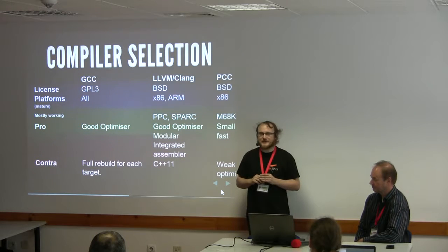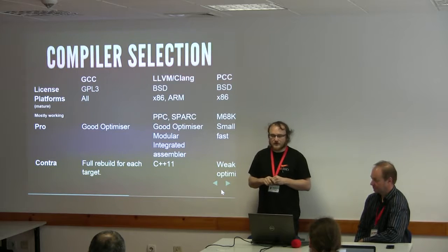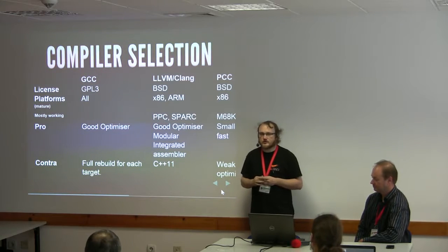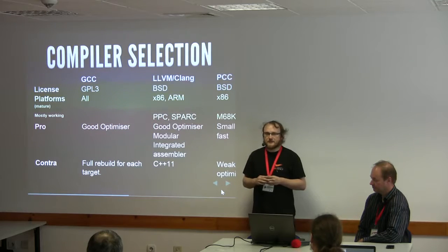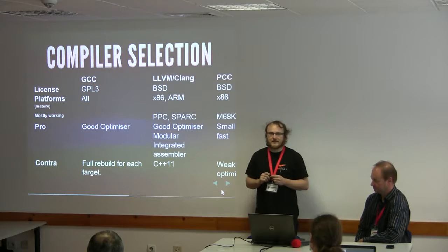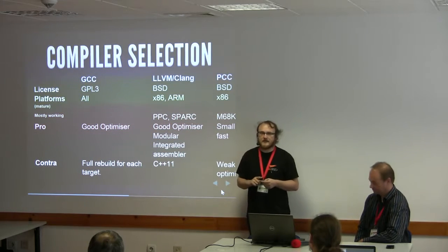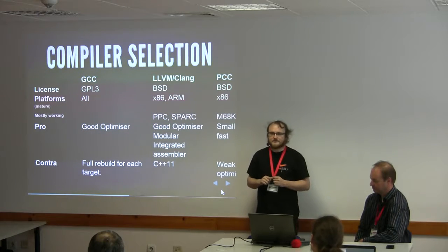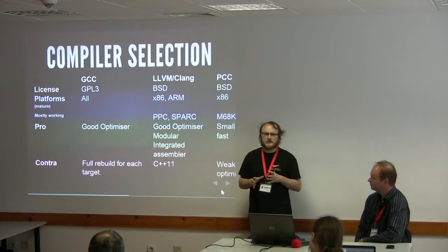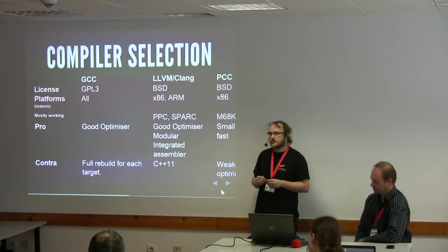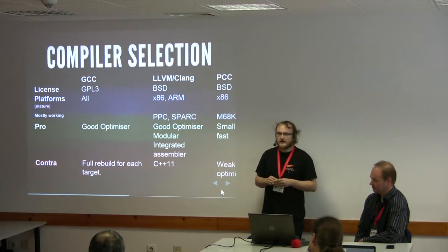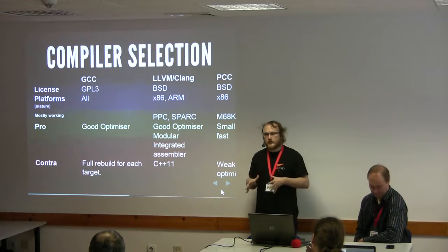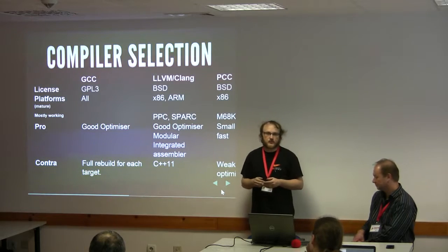GCC wants to move in the C++11 direction as well, so it's something everyone is going to hit sooner or later. The primary problem with PCC is that the code it generates is not very fast. Simple code is decent enough, but anything that really depends on inlining and fancy optimizations will see serious slowdowns. On the other hand, GCC and Clang are mostly on par when it comes to performance of generated code. GCC still has some advantages in vectorization and OpenMP support, but that's not so relevant for the base system.